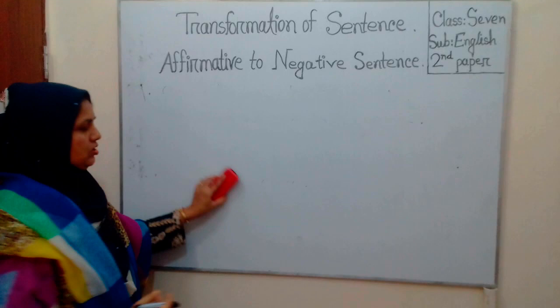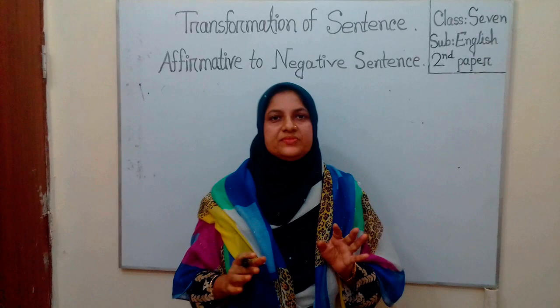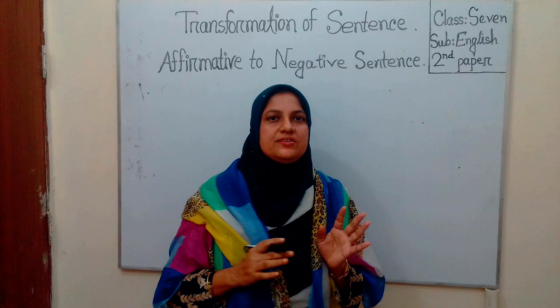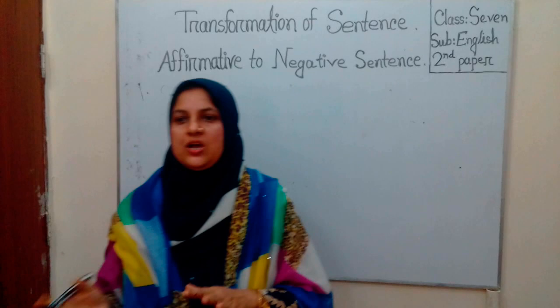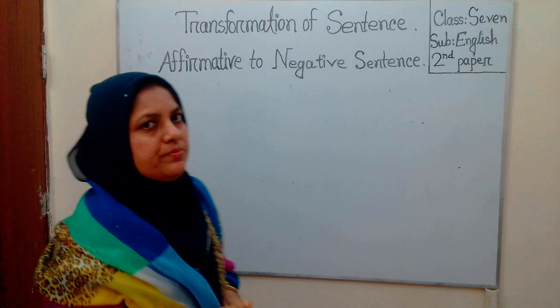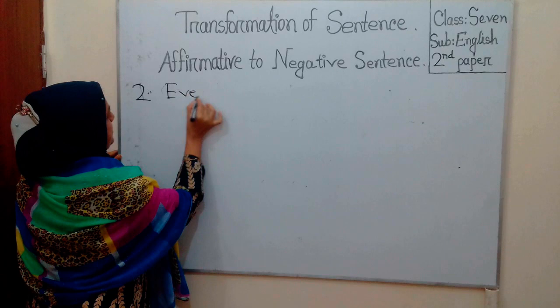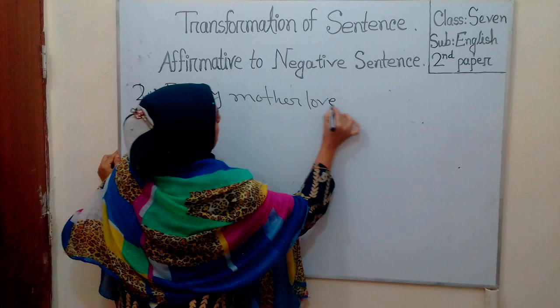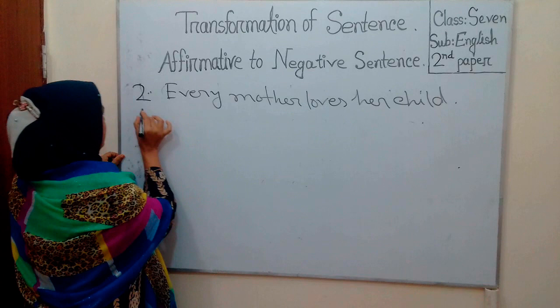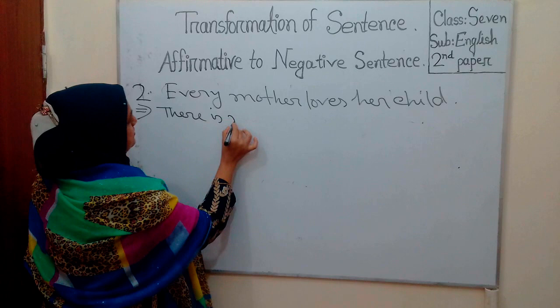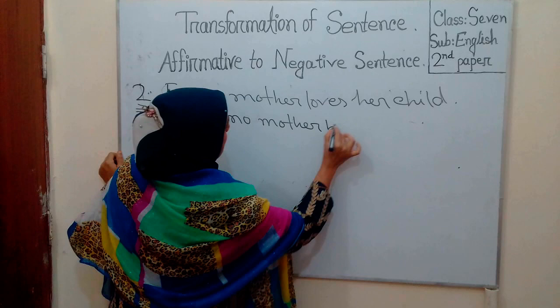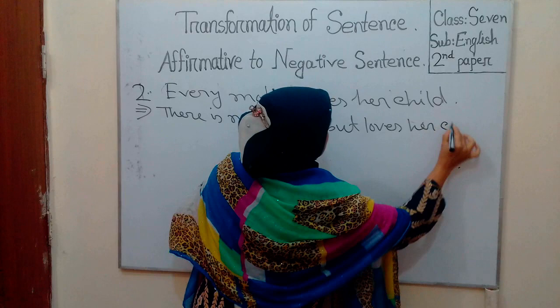Rule 2. If there is 'every' in the affirmative sentence, it should be changed into a negative sentence using 'there is no' plus noun or pronoun plus 'but'. Then the rest follows. For example: 'Every mother loves her child.' Negative sentence: 'There is no mother but loves her child.'